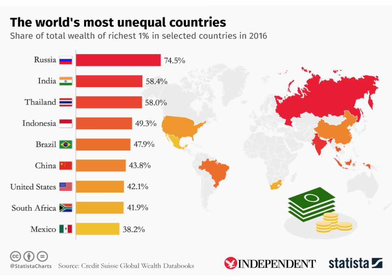In the United States and China it's lower, but still over 40%. So if we think about the top 1%, when it comes to wealth the income distribution is extremely highly skewed towards that group.